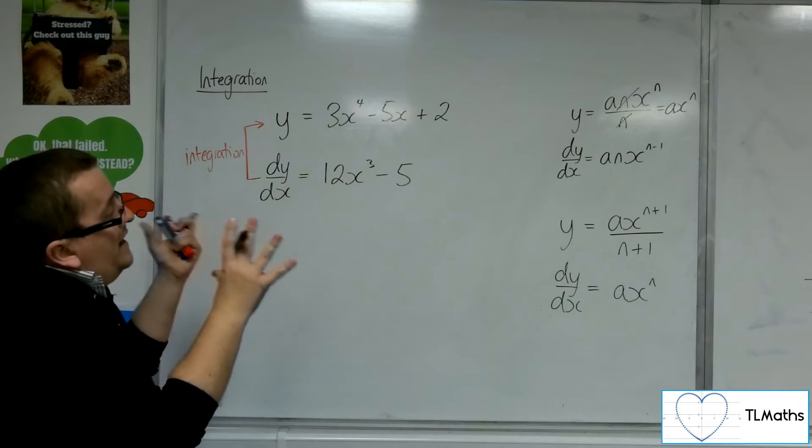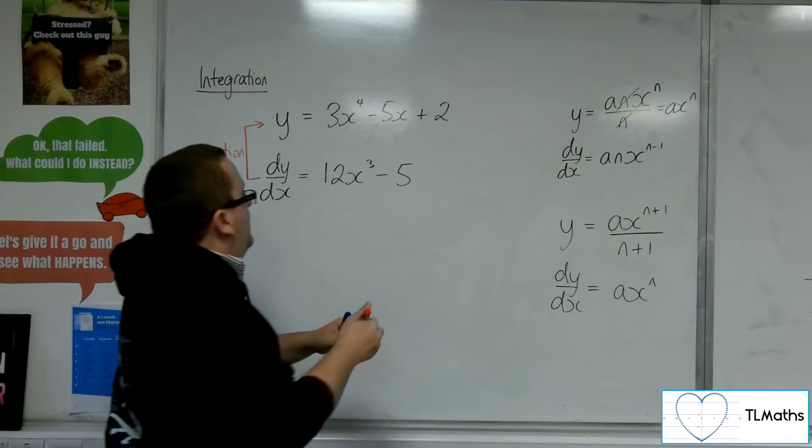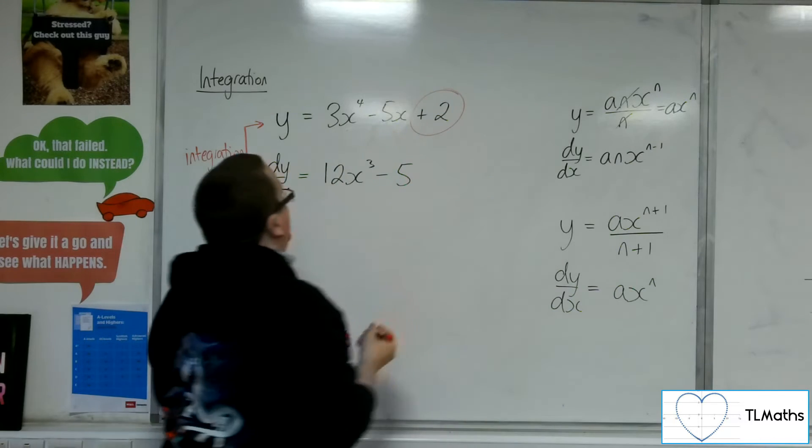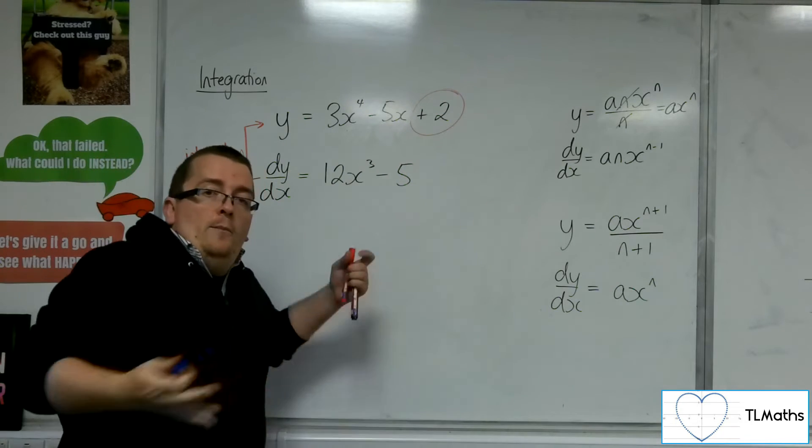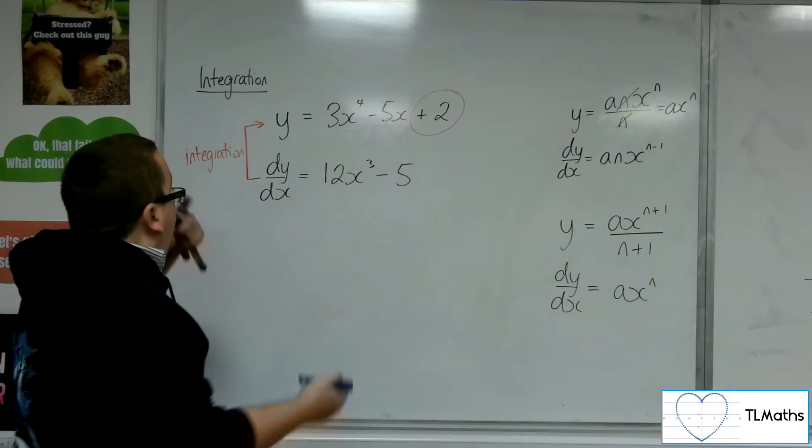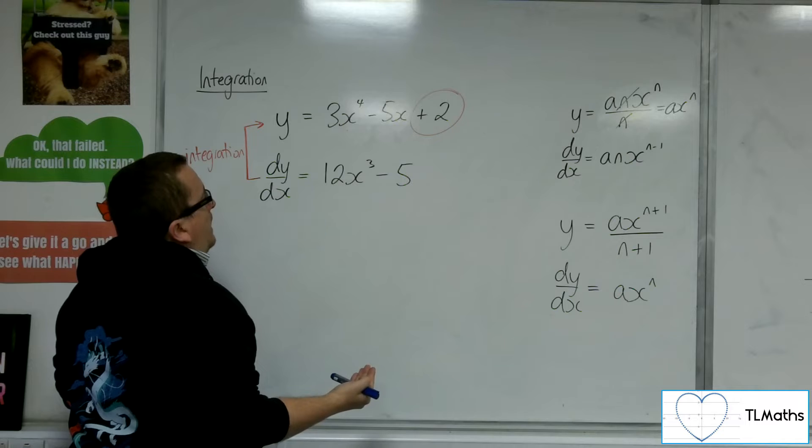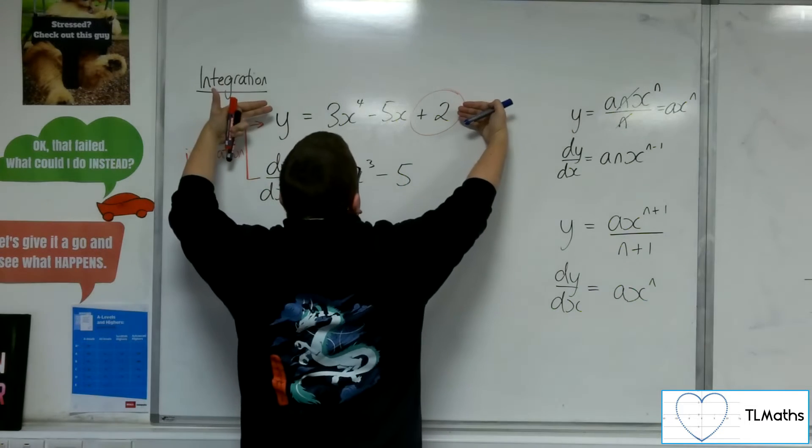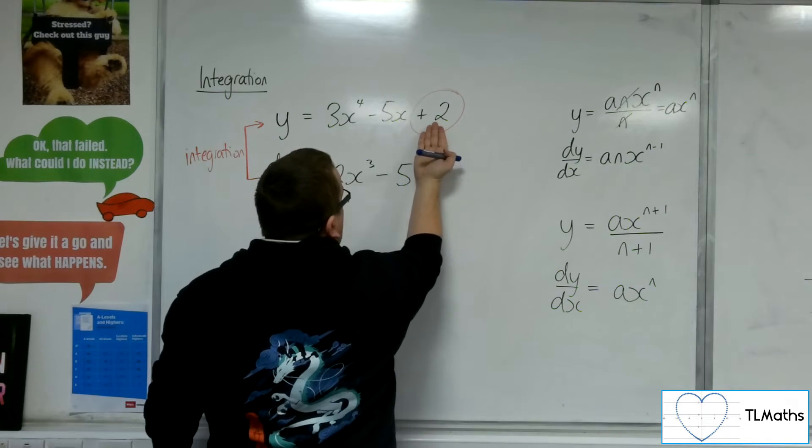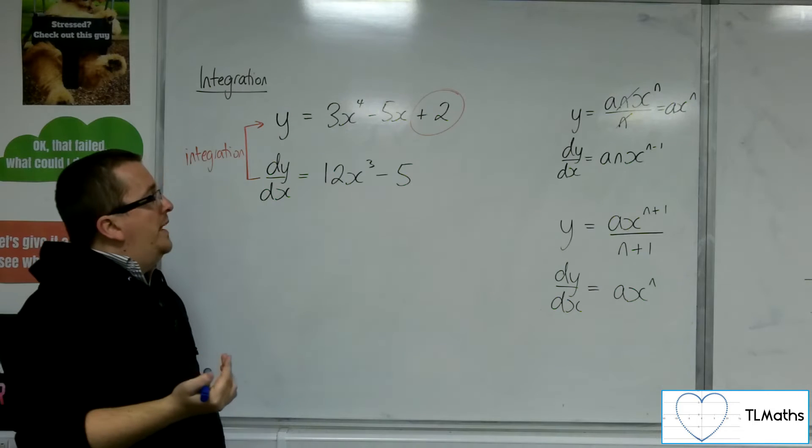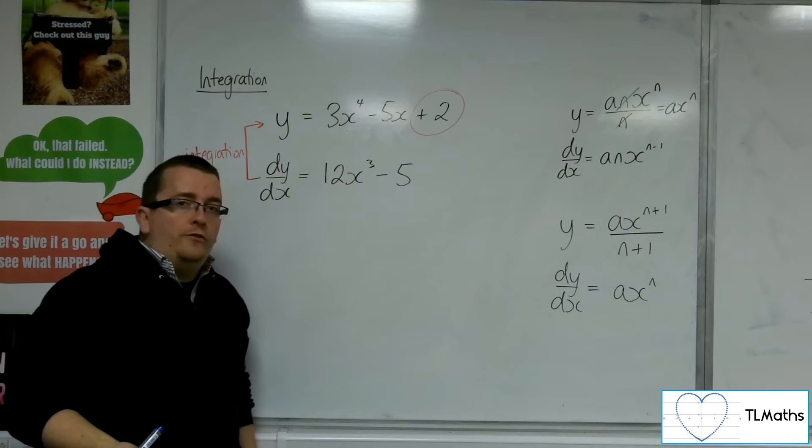However, there's an elephant in the room because there's this problem, this plus 2. How am I going to deal with that? Because if I'm starting with dy by dx equals 12x cubed minus 5 and I want to get back to this, there's nothing that tells me that that plus 2 was there. It could have been plus 200 for all I know.